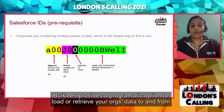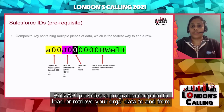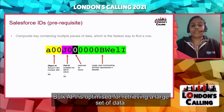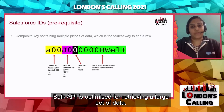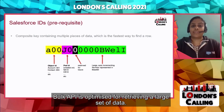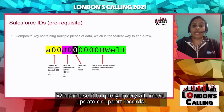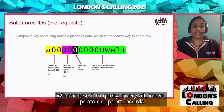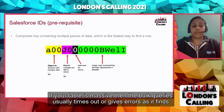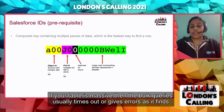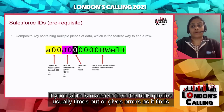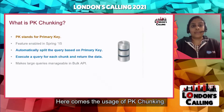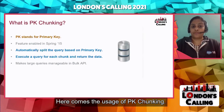As you all know, Bulk API provides a programmatic option to quickly load or retrieve your org's data to and from Salesforce. Bulk API is based on the REST principle and is optimized for loading or retrieving large sets of data. We can use it to query, query all, insert, update, upsert, or delete many records. But if your table is massive, bulk queries usually time out or give errors, as it finds it hard to complete the process. This is where PK chunking comes in.